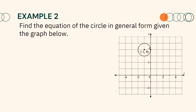Let us have another example. Find the equation of the circle in general form given the graph. As emphasized earlier, it is important to first determine the center and radius. From the illustration, the center is at negative 1, 4, and the radius is equal to 1 unit. Therefore, H equals negative 1 and K equals positive 4.